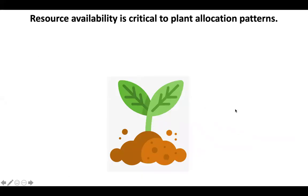One of the big pieces is resource availability. Resource availability and where the plant takes up its nutrients is key to how they are going to allocate nutrients. So if we're looking at this plant right here — this little cartoon — we're going to think about a few different things. First, we have light coming out of the leaves from the sun. So this is critical for photosynthesis and making all of the resources we need for plants to function.